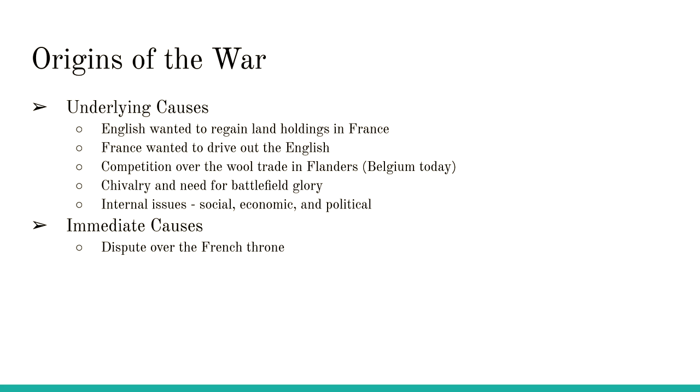The English kings wanted to regain their large land holdings in France that they had back in the days of Henry II, but they lost them under King John during the Third Crusade in the 1200s. The French, by contrast, wanted to retain what they had acquired in the past 100 to 150 years, and then drive the English completely out of France. So the English wanted to stay in France, and the French wanted the English out.